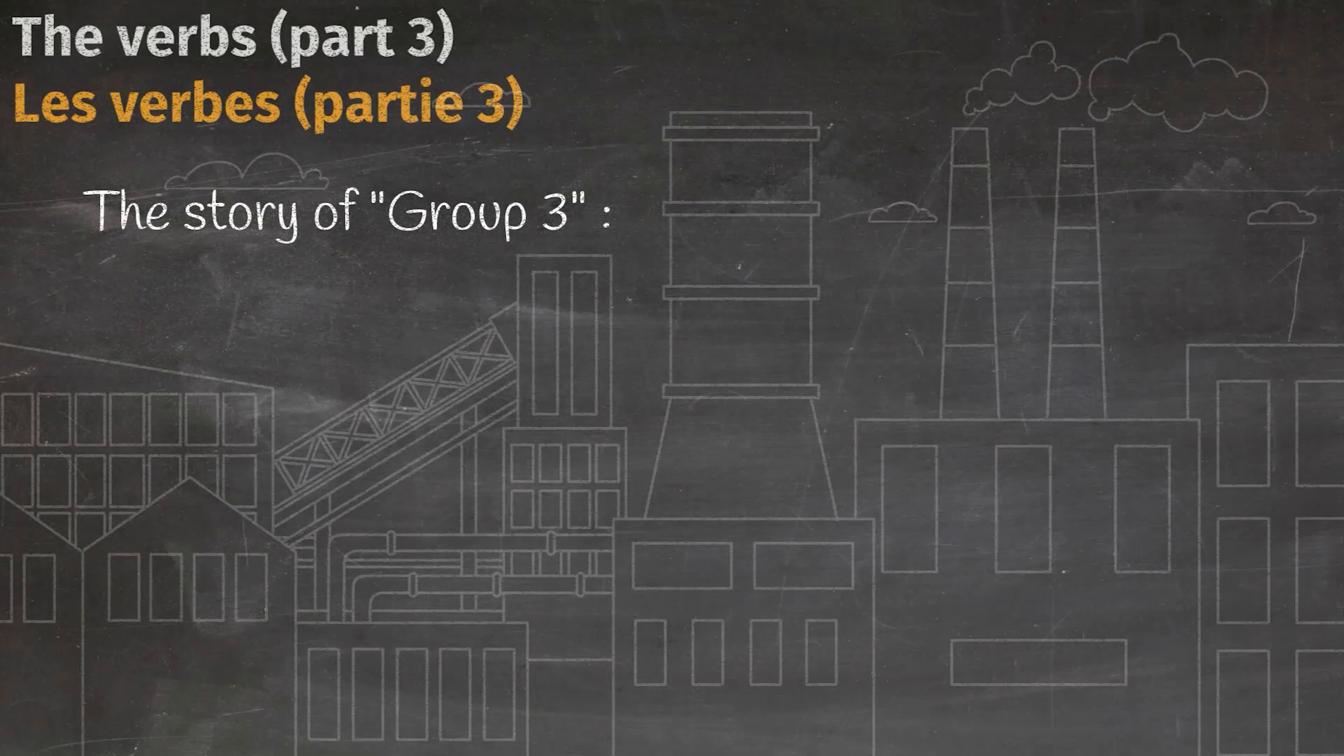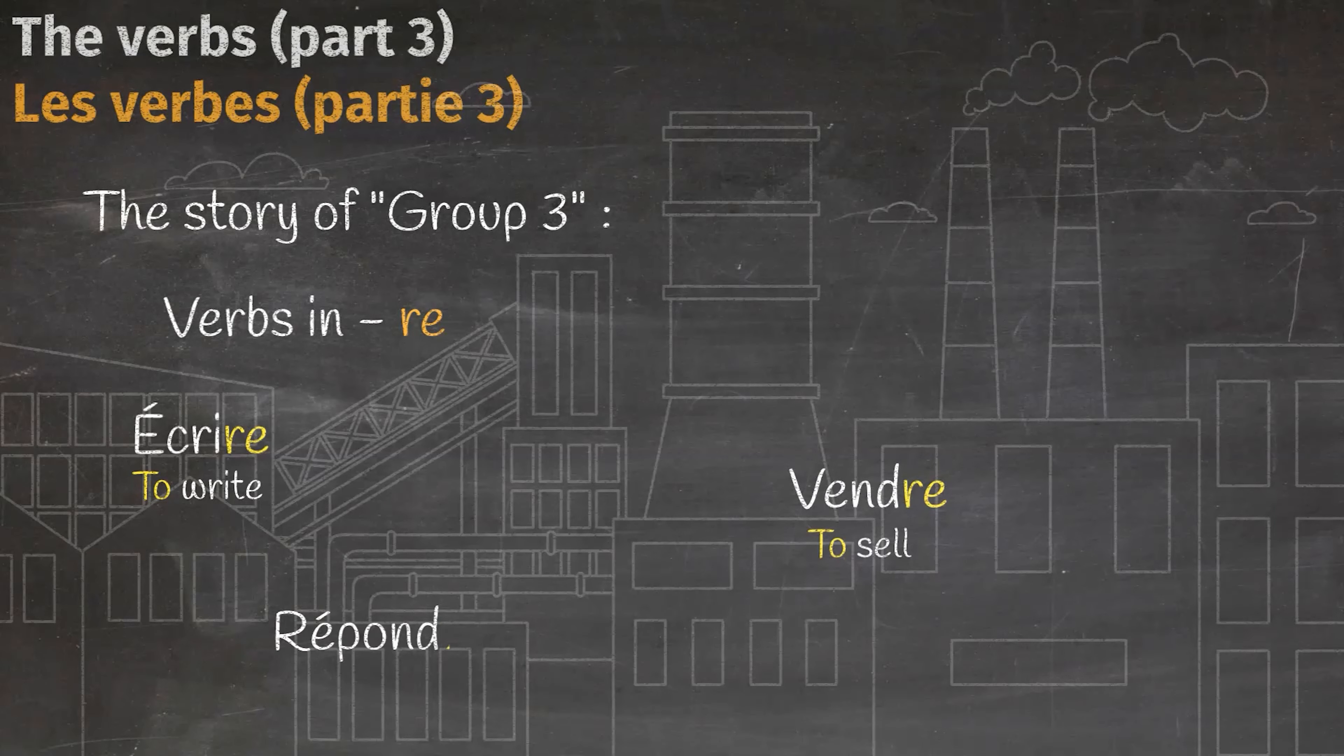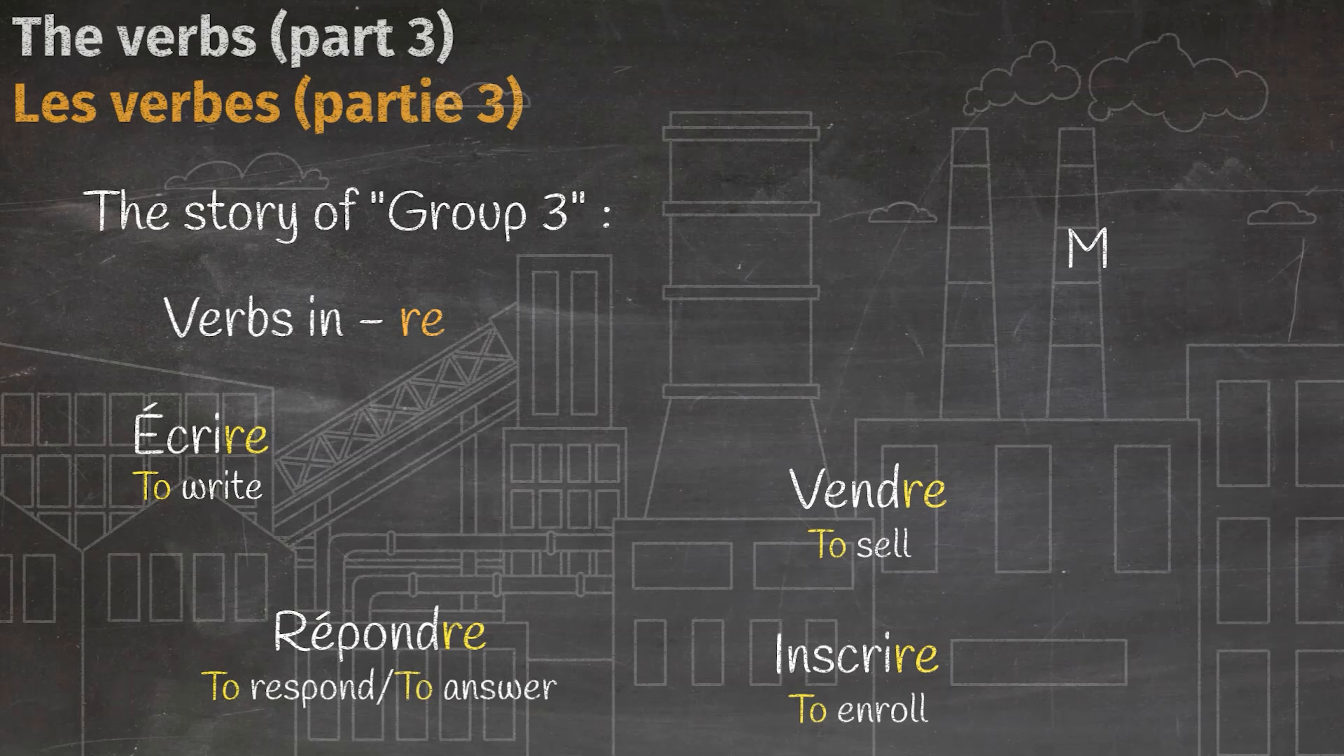There is a big factory in France in which verbs are produced. The '-re' that you see is the sign of the third group of infinitive verbs in French. Here you can see a few examples of the third infinitive group of verbs.